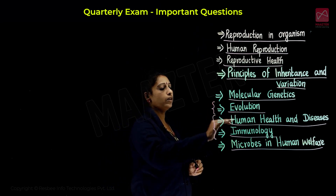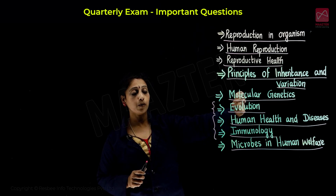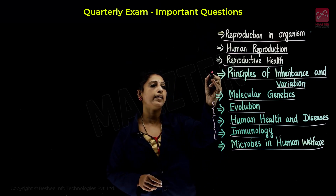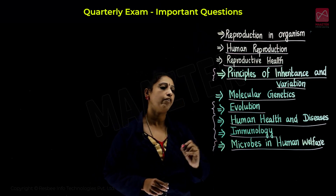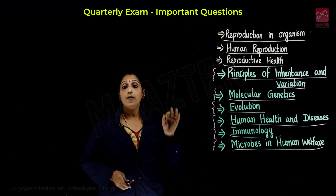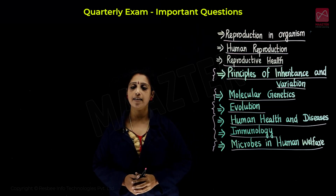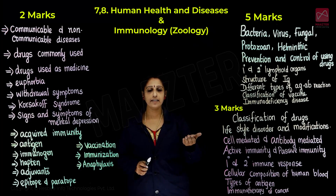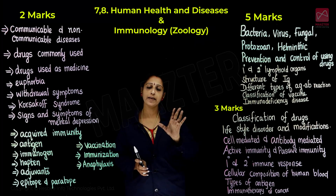Next is Evolution, which is a little easier to compare but still has important questions coming. Then Principles of Inheritance and Variation, Microbes in Human Welfare, and Molecular Genetics. We are going to go from easy to hard, based on how easy it is for you to score. I'm going to tell you what lessons we will learn first, and we will talk about important questions.